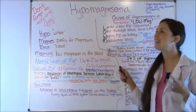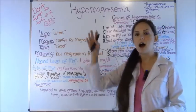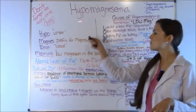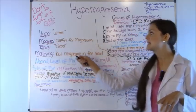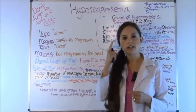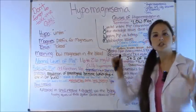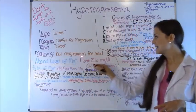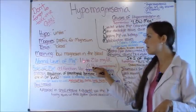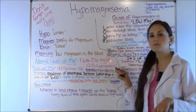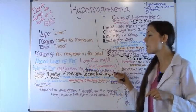As always, I like to break these words down and determine what electrolyte we are dealing with and whether it is high or low. The first part of this word is hypo, which means under. Magnes is the prefix for magnesium, so we know we are dealing with magnesium. And emia means blood — so put it all together and you get low magnesium in the blood. A normal magnesium level is 1.6 to 2.6 milligrams per deciliter, and anything less than 1.6 is considered hypomagnesemia.